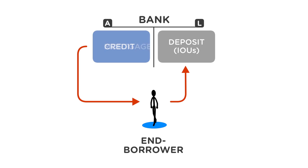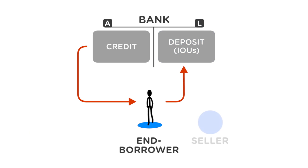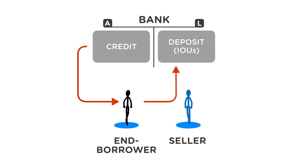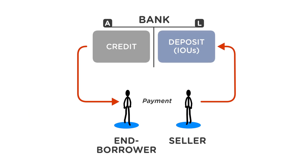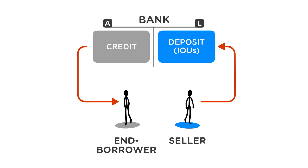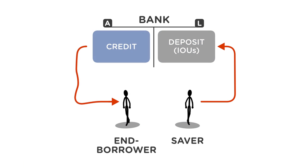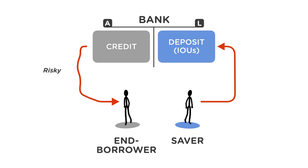This creates credit on the asset side of the bank's balance sheet and a deposit on the liability side. When the end borrower finally buys a house and makes a payment to the seller, he transfers his deposit to the seller. As long as the seller holds the deposit, he essentially, through the bank, lends funds to the end borrower. Notice that after the purchase of the house, the mortgage to the end borrower is risky to the bank, while the saver's deposit is supposedly risk-free.